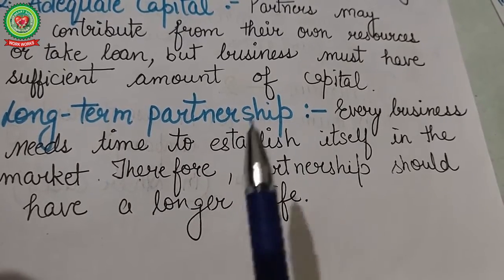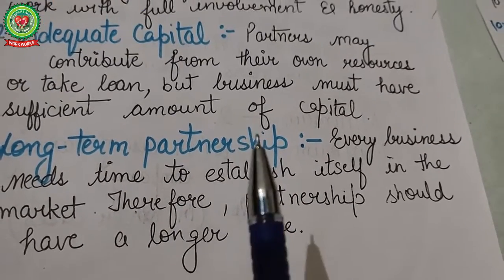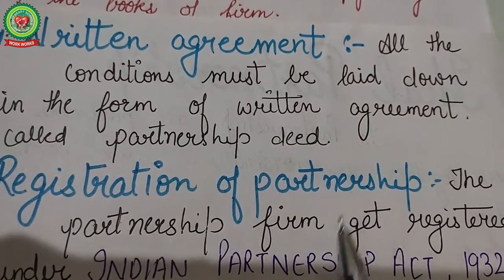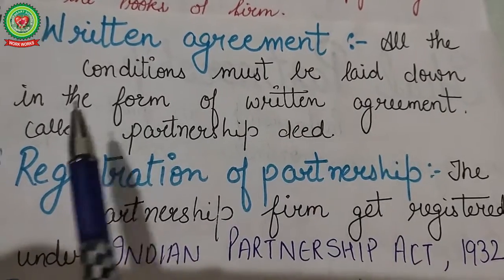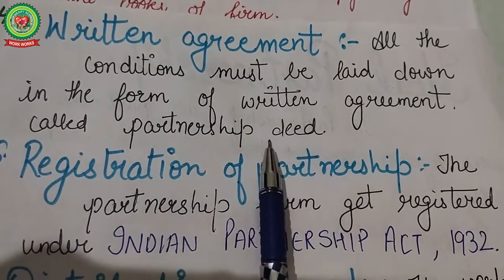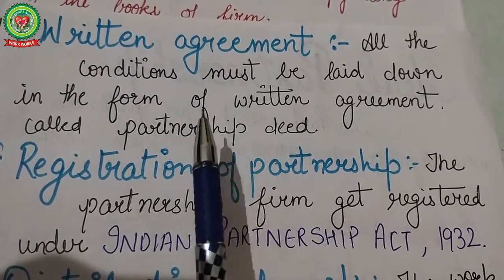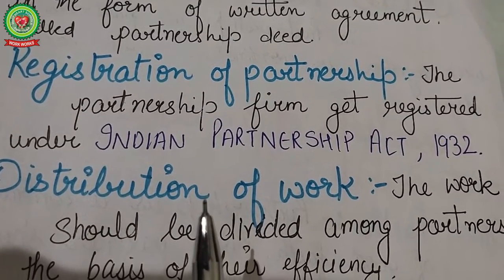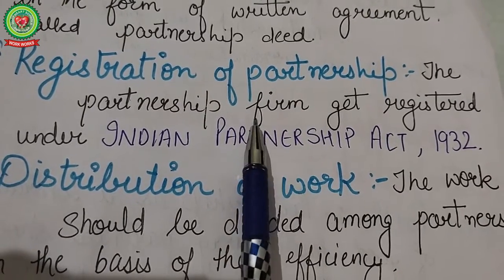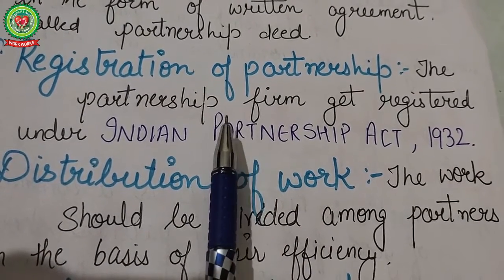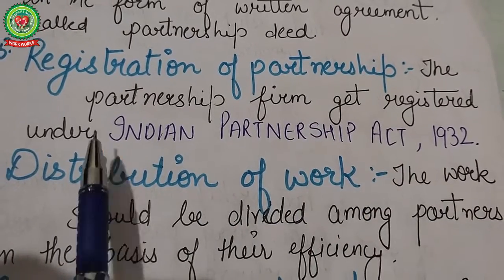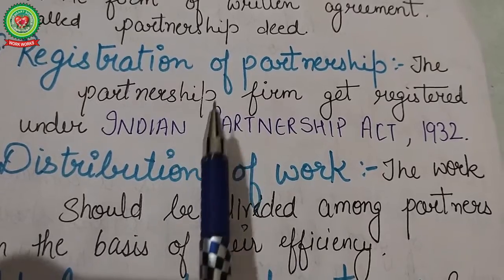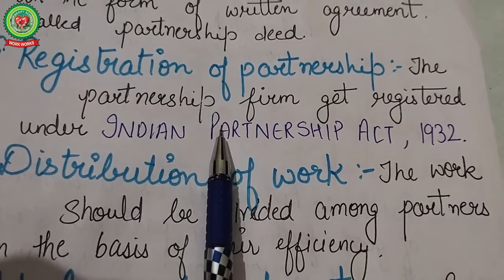Next is written agreement: all conditions must be laid down in the form of a written agreement called a partnership deed, so that there is no scope for conflicts in future. Next is registration of partnership: while it is not legally compulsory, a partnership firm that gets registered under the Indian Partnership Act 1932 gains certain benefits and rights under this act.